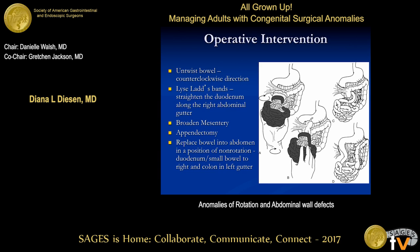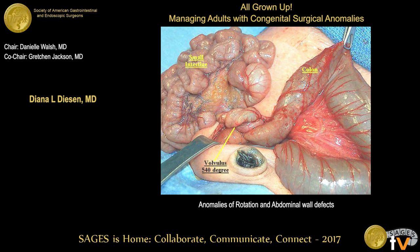Operatively, what we do for malrotation is what's traditionally called the Ladd's procedure. There are five main steps: you untwist the bowel in a counterclockwise direction, lyse the Ladd's bands and straighten the duodenum along the right gutter, broaden the mesentery, and replace the bowel into a position of non-rotation with small bowel on the right side and large bowel on the left side. Though not initially in the original description, oftentimes patients will also have an appendectomy at the time of the procedure because otherwise the appendix is in an abnormal location and you can have an atypical presentation of appendicitis.